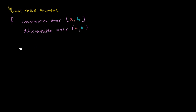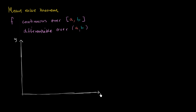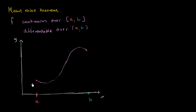So let's just try to visualize this. Here's my function — that's the y-axis and this is the x-axis. Let me draw my interval: that's a, and then this is b right over here. Let's say our function looks something like that. So this point right over here, the x-value is a and the y-value is f of a.